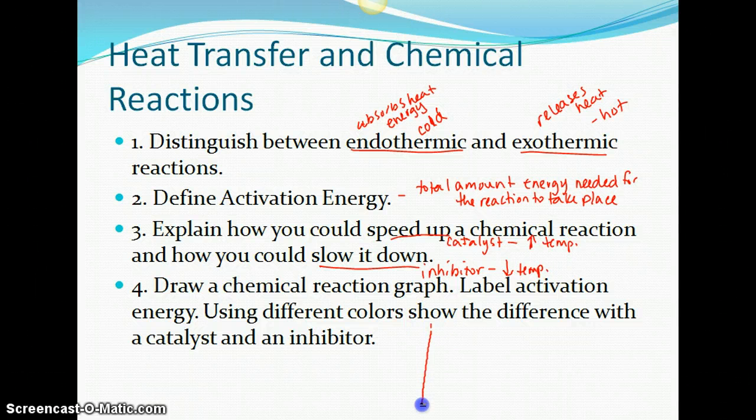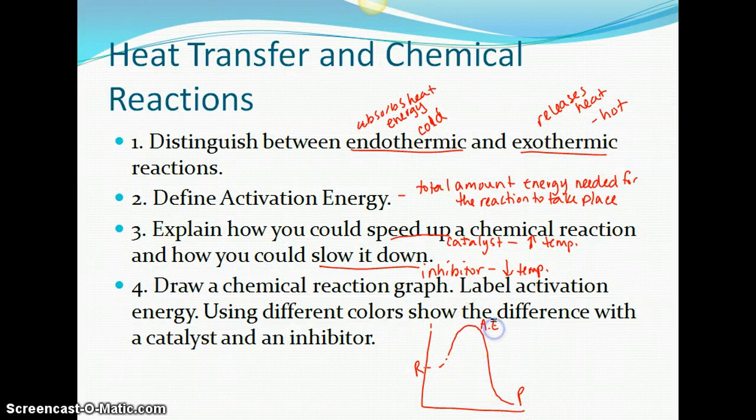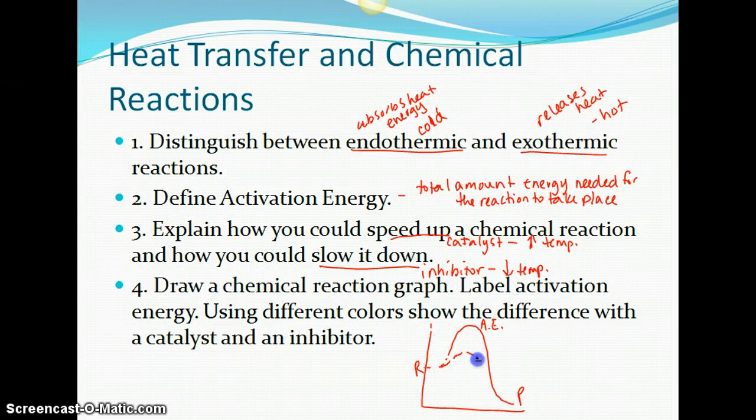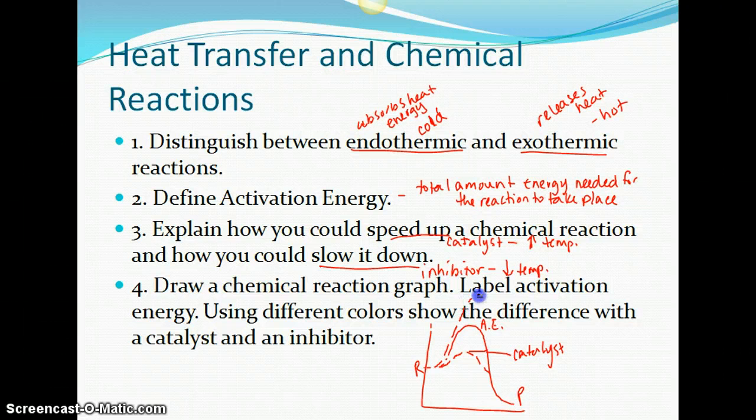Draw a chemical reaction graph, so it looks like this. Reactants are at the start. These will be the reactants. Products are at the end. This is activation energy. If you decide to have a catalyst, it'll lower the activation energy. Catalyst will be there. And if you use an inhibitor, it'll increase the activation energy. So that would be an inhibitor. Look back in your notes. I gave you a worksheet on that that we actually did together in class. So take a look back at that.